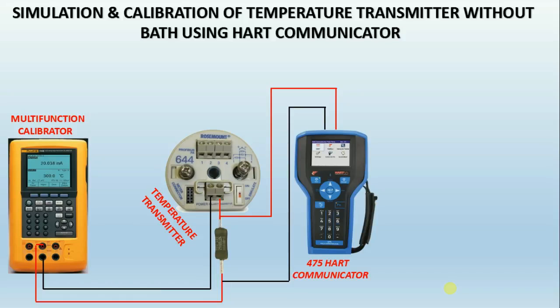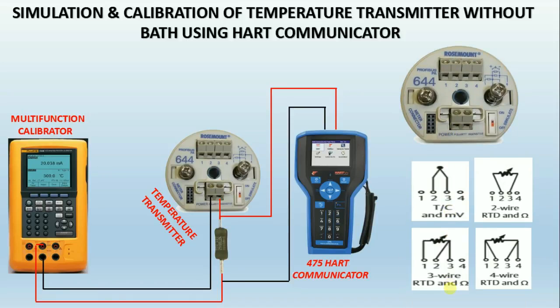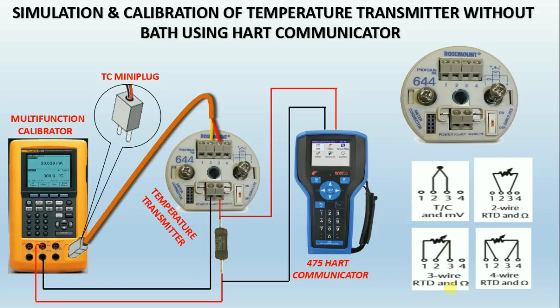Now we will see how to simulate and calibrate a temperature transmitter using HART. The transmitter can be configured for different types of RTDs and thermocouples, and shown how to connect to the transmitter according to your configuration. Here as an example, I connected the thermocouple option in a transmitter for calibration. Before simulating, first select the source in the process calibrator, then press the TC/RTD button and select the type of thermocouple. Then simulate temperature by feeding through a keypad.